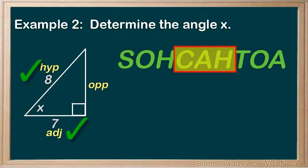Cosine equals adjacent over hypotenuse. Or, cos of X, our angle, is equal to 7 over 8. Now, we need to isolate the X.